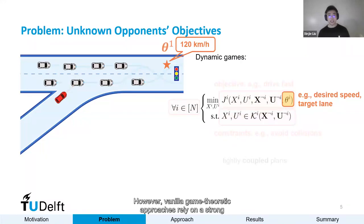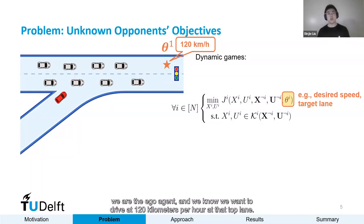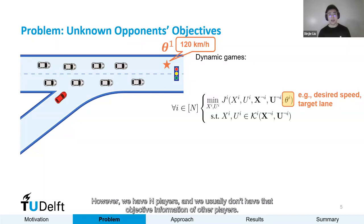However, vanilla game theoretic approaches rely on a strong assumption, namely known objectives of all the players. But this is usually not true in many real world application scenarios. Say in this driving scenario, we are the ego agent, and we know we want to drive at 120 kilometers per hour in that top lane. However, we have n players, and we usually don't have objective information of other players.